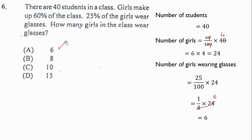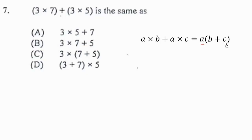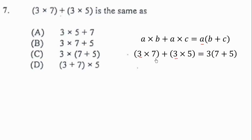Question 7: 3 times 7 plus 3 times 5 is the same as what? We use the distributive property: a times b plus a times c equals a times (b plus c). Here, 3 is the common factor, so we write 3 outside and (7 plus 5) inside. That gives 3 times (7 plus 5) as the correct answer.